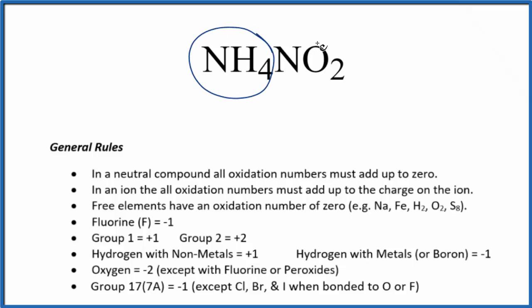The nitrite ion NO2 has a negative charge. The ammonium ion has a positive charge. So we can use that to figure out the oxidation number on the nitrogen here in the ammonium ion and then in the nitrite ion.